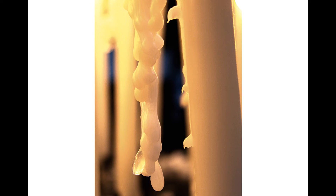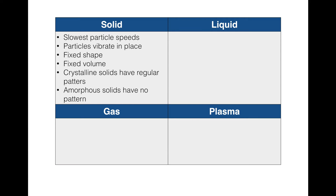Let's get our graphic organizer ready. For solids: they have the slowest particle speeds, their particles vibrate in place, they have a fixed shape and fixed volume, and there are two types of solids — crystalline solids have regular patterns, and amorphous solids have no pattern at all. Make sure you have that written down, and now we'll look at liquids.